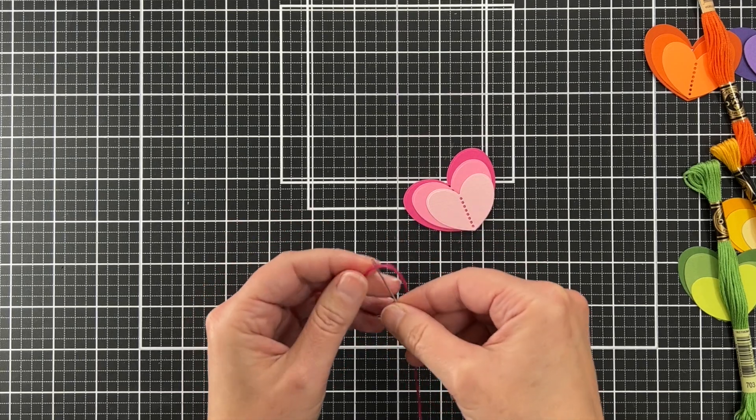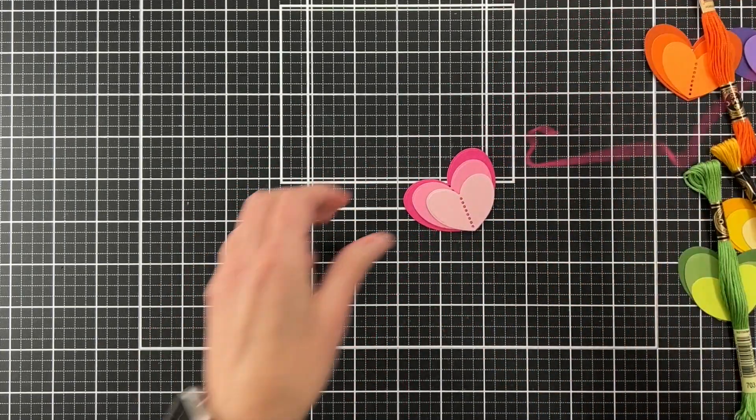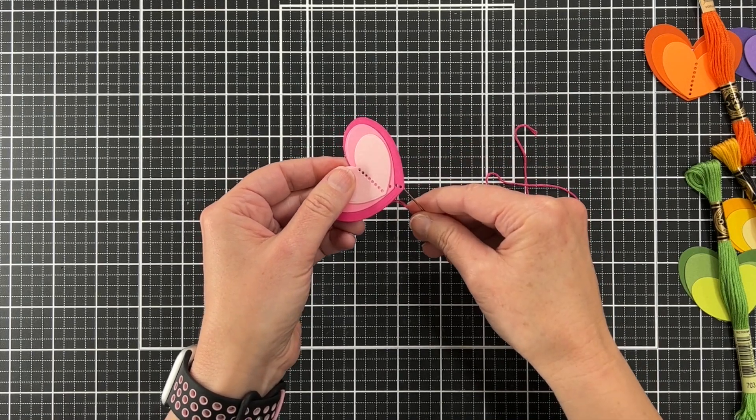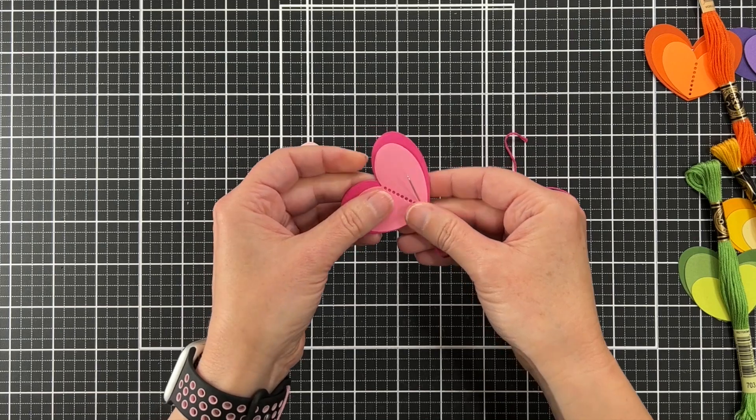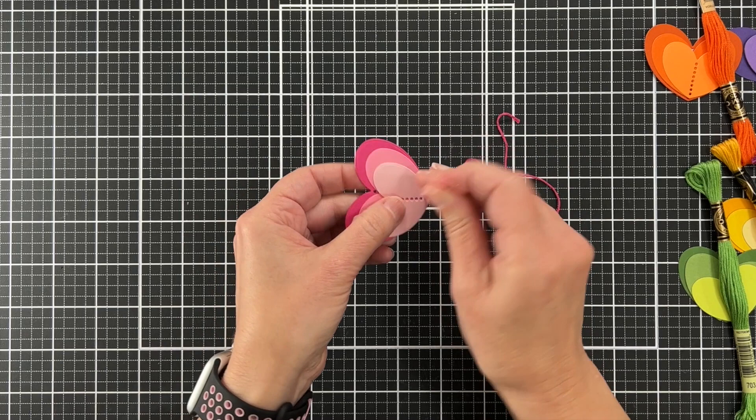I'm using DMC floss and there are six strands. I chose to use all six strands, so that's why it was a little challenging to get that through my needle. And of course I couldn't find my little tool because I'm always losing everything.